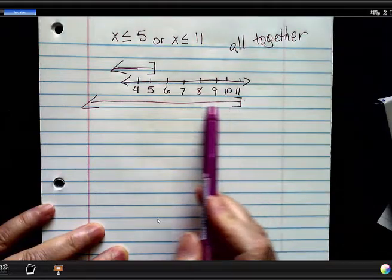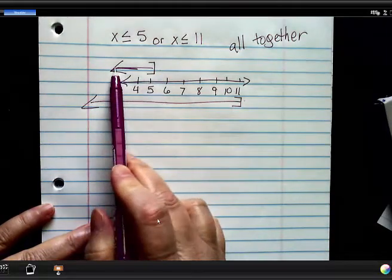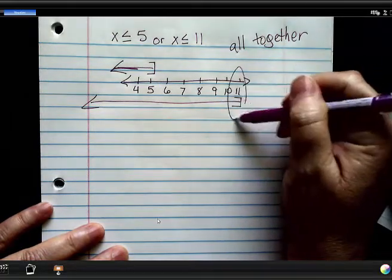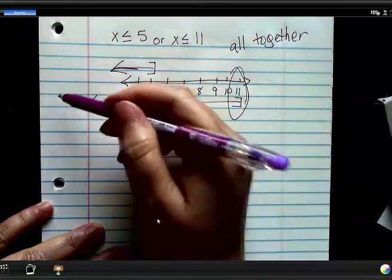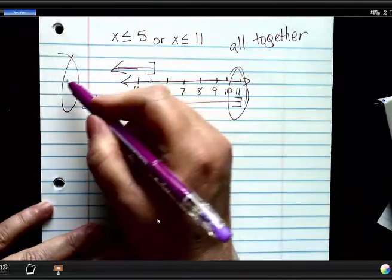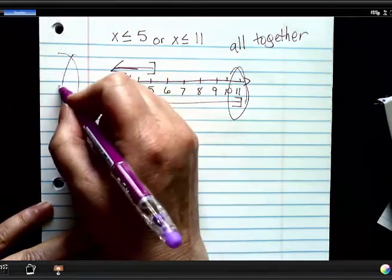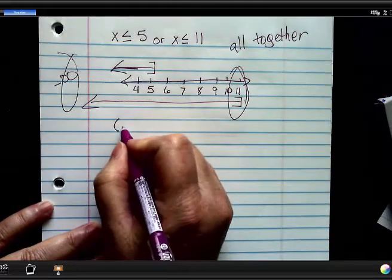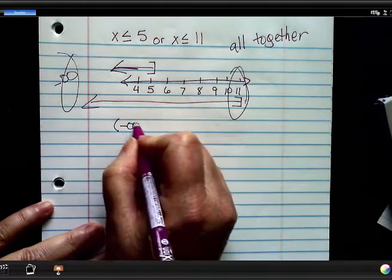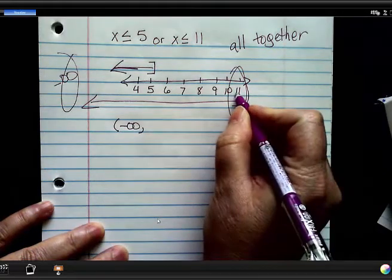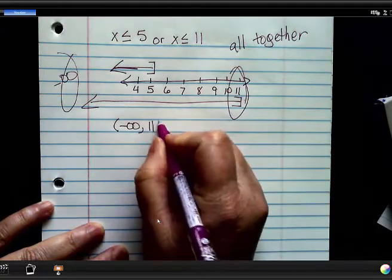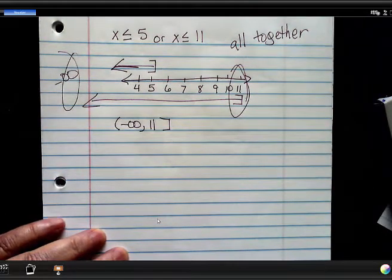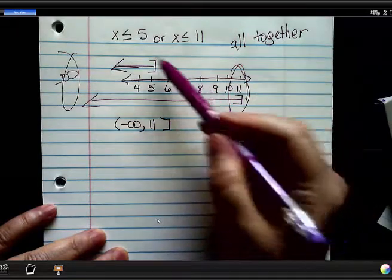So I need to graph all of this one and all of this one together, which means where does my farthest one start? Here. And where do they end? Infinity. What type of infinity? Negative infinity. So this would be parentheses, negative infinity, comma, 11, bracket. Because that's where they both intersect. Not intersect. They both join together.